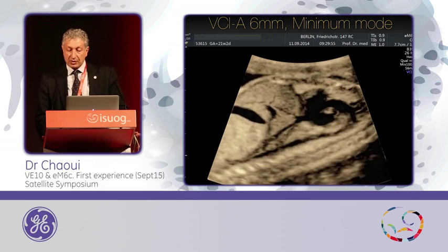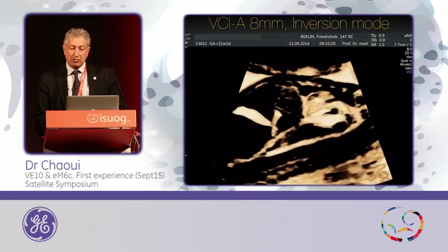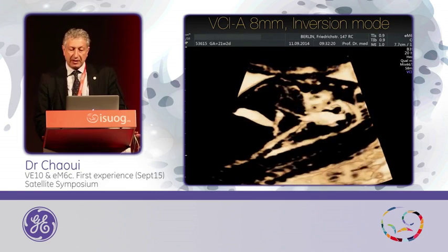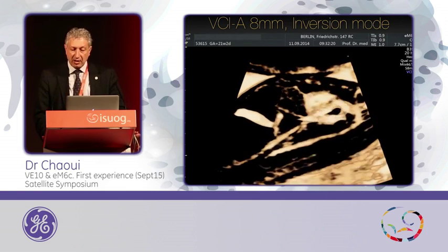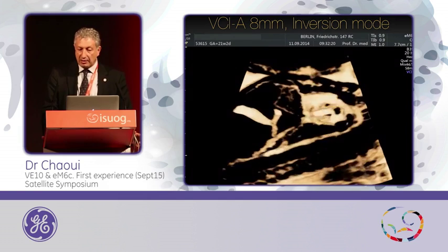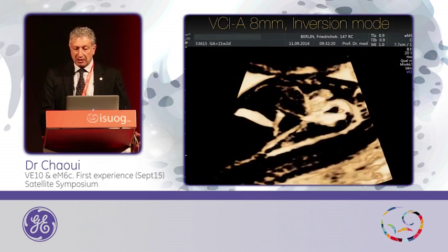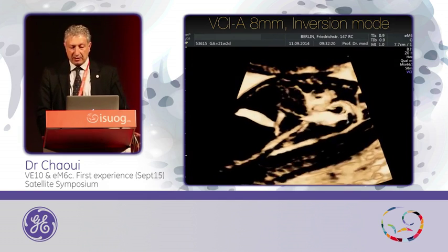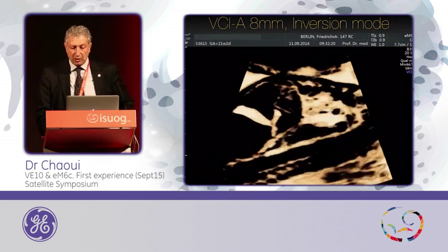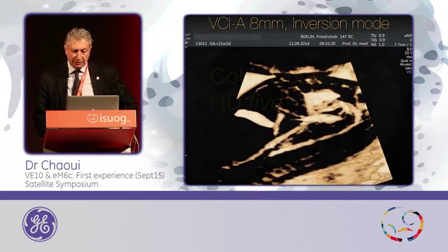And if I decide not to continue with 6 millimeters but to use the inversion mode, and by getting 8 millimeters, then I can demonstrate with high resolution and with 20 images per second the IVC and the descending aorta within one view for good documentation of both.